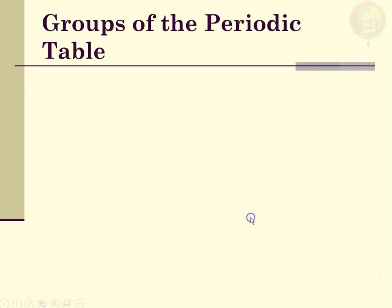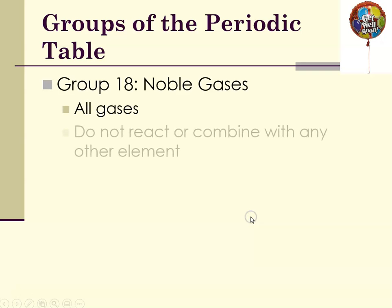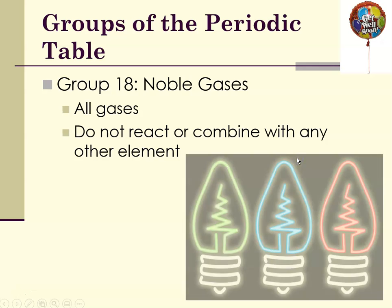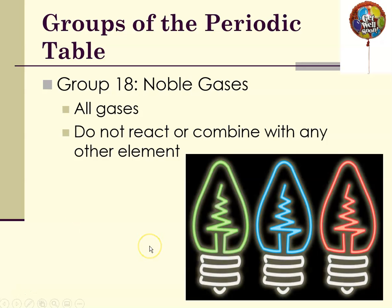Group 18 is the noble gases. Spoiler alert — they're all gases. They do not react or combine with any other element unless you really force them. They are inert. Their electron configuration is so stable that they simply do not react.